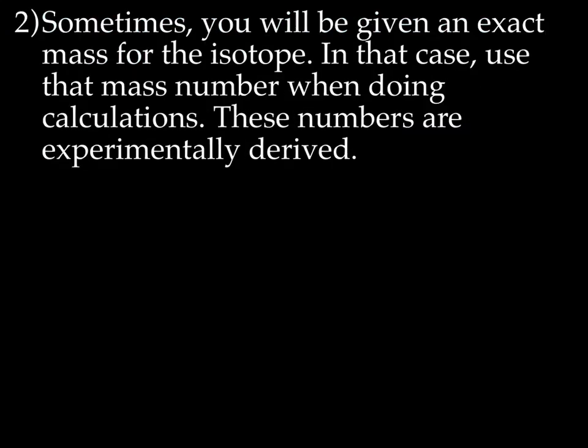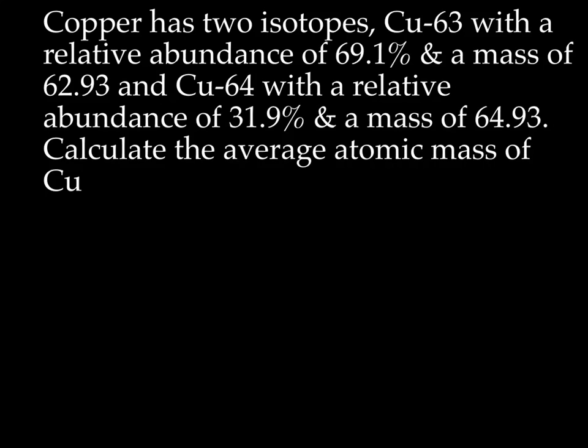Let's try another one. But first, I want to point out that sometimes you'll be given an exact mass for the isotope. And in this case, use that mass when doing calculations, because these numbers were experimentally derived. So they're very precise. So now we have copper that has two isotopes. We've got copper 63 with a relative abundance of 69.1%. But now they know the exact mass of this copper 63, which is actually 62.93. So we're going to use that number instead of the copper 63. And we have copper 64 with a relative abundance of 31.9% and a mass of 64.93. So we're going to use, since we know the exact mass, we're not going to use this 64. We're going to use the 64.93.